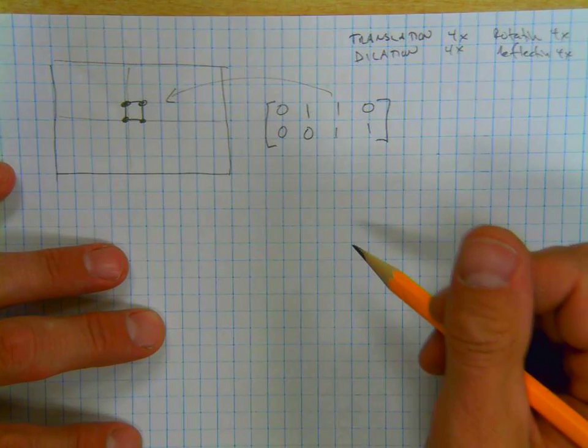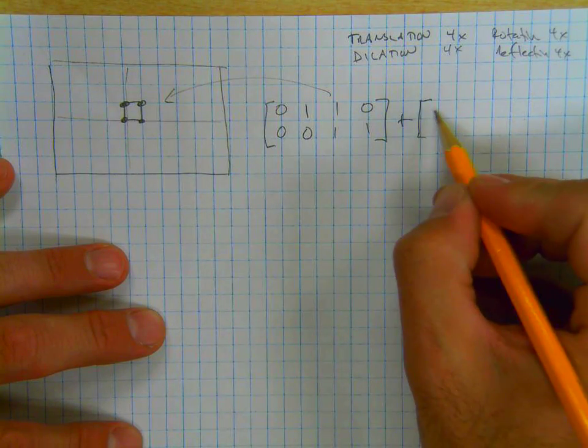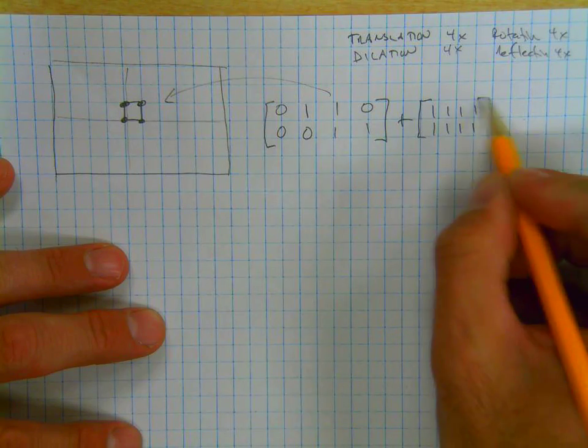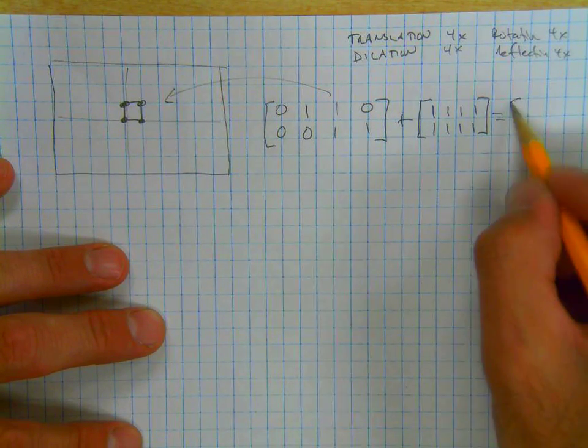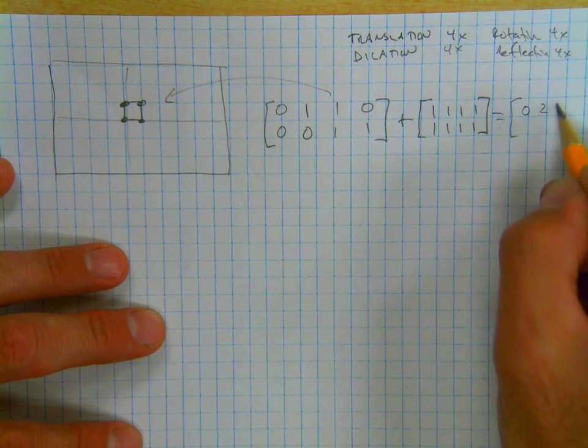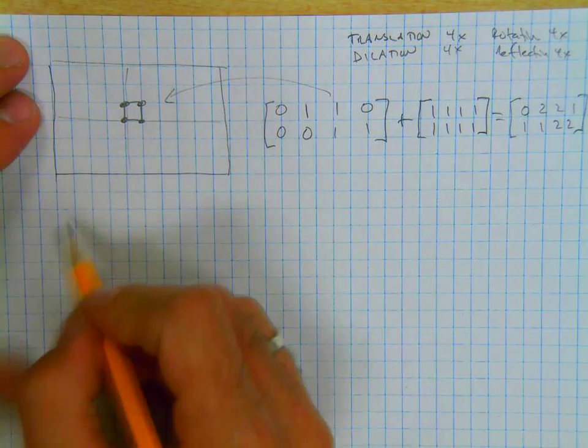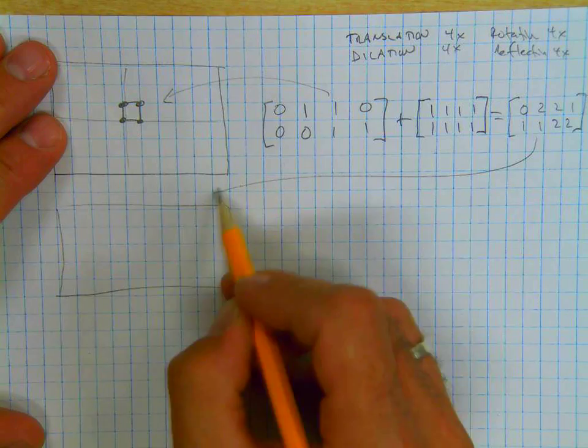So say, for example, you want to do a translation first. What you're going to do is add a translation matrix. Maybe we'll move it one in the X and one in the Y. So there's your translation matrix. And then you're going to get the image matrix. And it's going to be 0, 2, 2, 1, and 1, 1, 2, 2.